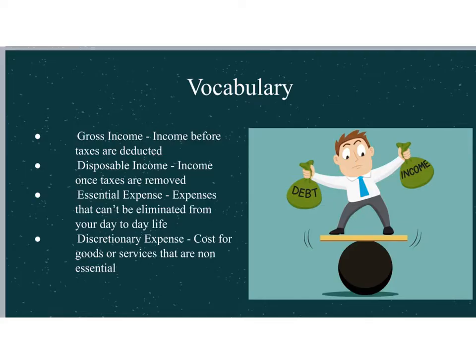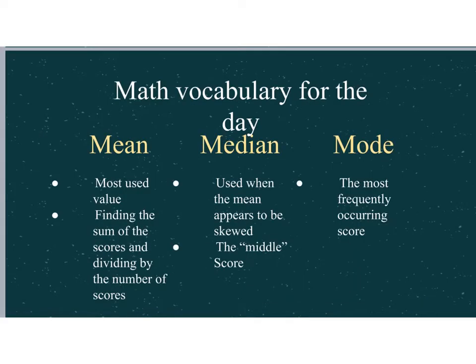And then the money that we actually receive after taxes are taken out is called disposable income. So when we think about the money we're getting when we're working, we want to think about essential expenses and discretionary expenses. An essential expense would be an expense that cannot be eliminated from your day-to-day life. We're talking about things like food, clothing, shelter, things that you need to function on a day-to-day basis. The discretionary expense is costs for goods or services that are non-essential. You need shoes, yes. But do you need $90 boots? Maybe not. That might be more of a discretionary fund. Going on vacation would be a discretionary expense. Going to the movies, things like that, that are not essential to your existence.